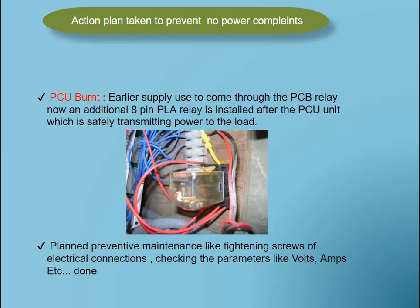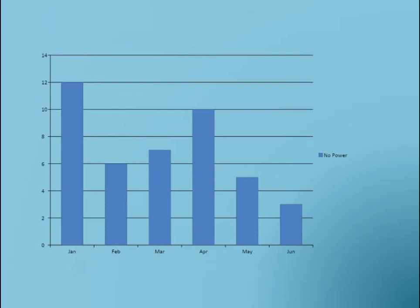We have to take action to prevent the no power complaint. In case the power control unit burns, identify the reason. In one case, we replaced the power supply PCB relay with an 8-pin PLAR relay, which safely transmitted power to the load. Preventive maintenance — such as tightening electrical connection screws and checking parameters — also helps prevent no power complaints. After implementing this 5S study, we saw complaints reduce month by month.